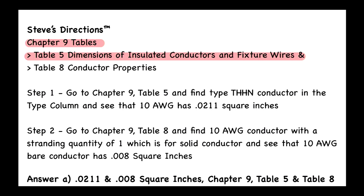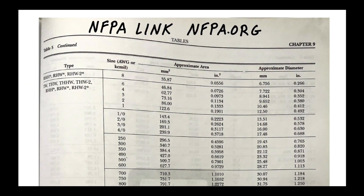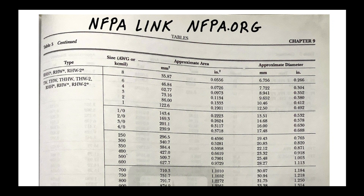A few words about the NFPA link — having the code book on your cell phone is absolutely fantastic. You can check it out at nfpa.org; I think they give you a two-week free trial. All right, so we are going to go to Table 5.